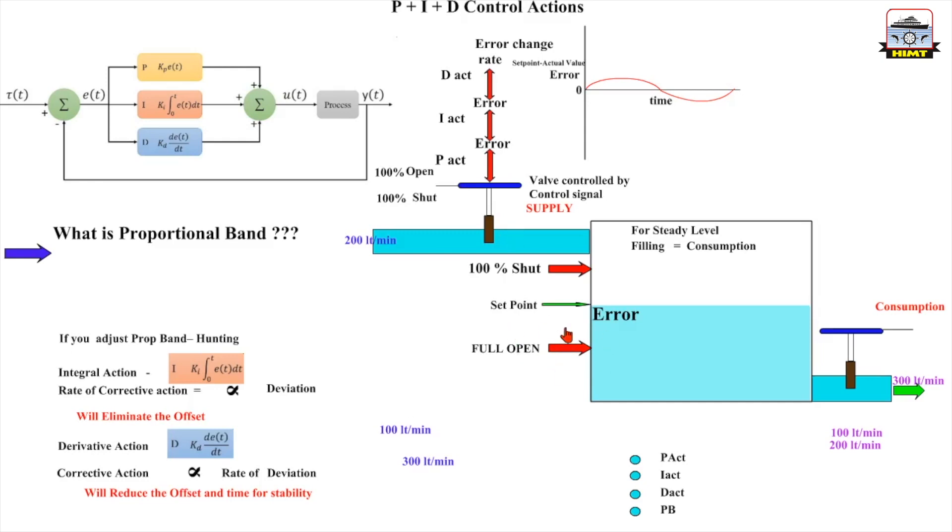The processing of these controls can be pneumatic, electronic, digital and generally they can be used for anything like controlling the level, controlling the pressure, controlling the temperature, controlling the speed.